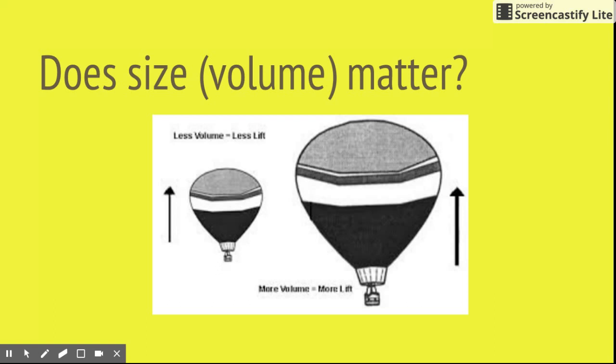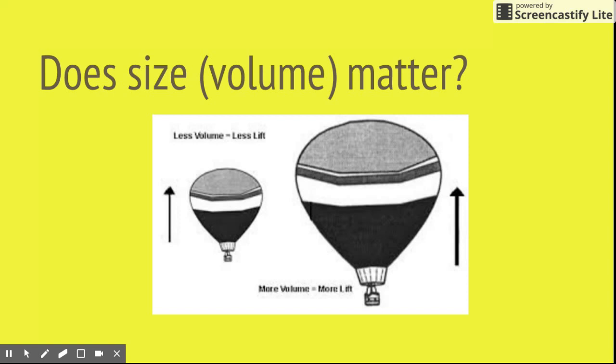Just to lift an adult man's weight, you need about 13 feet in radius, with the air inside heated up to a temperature of about 250 degrees Fahrenheit. That explains why hot air balloons are generally so large.